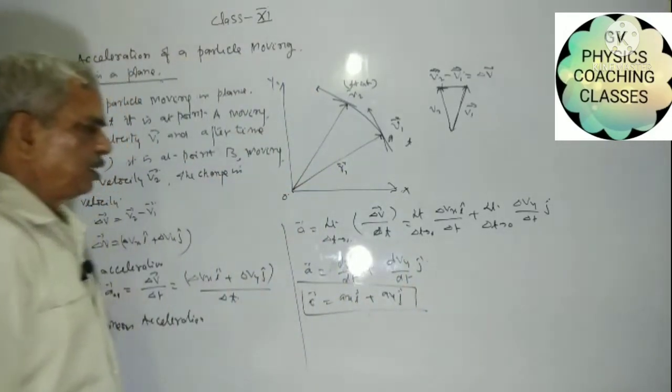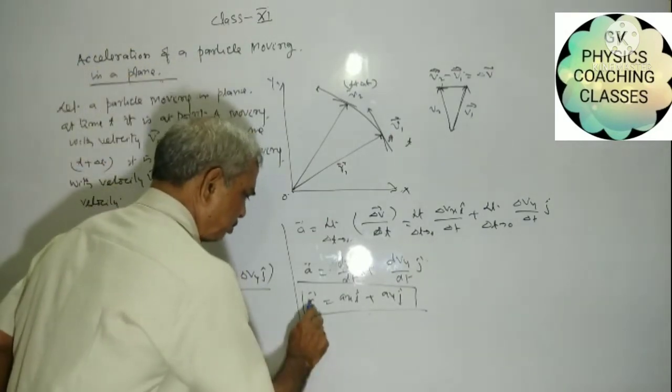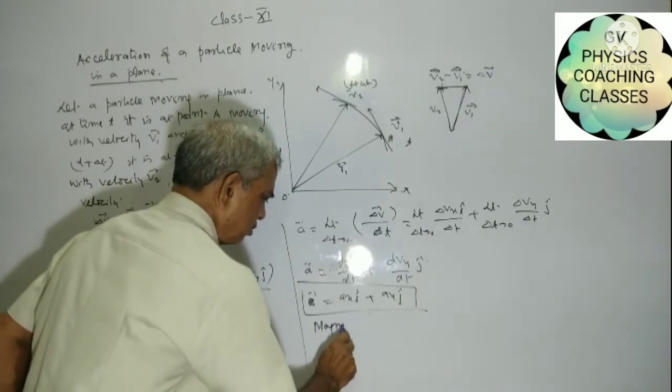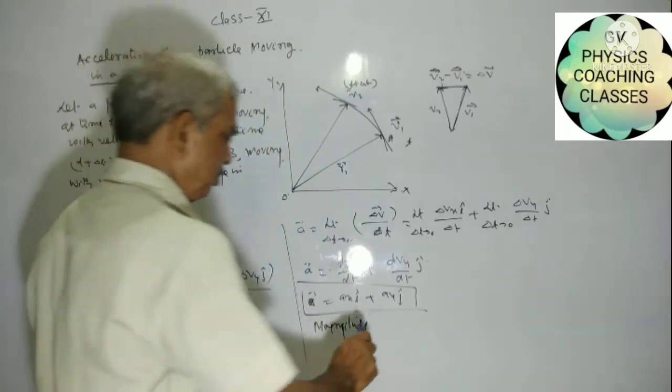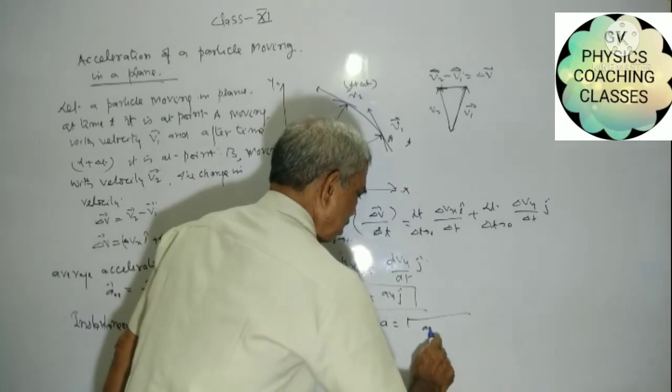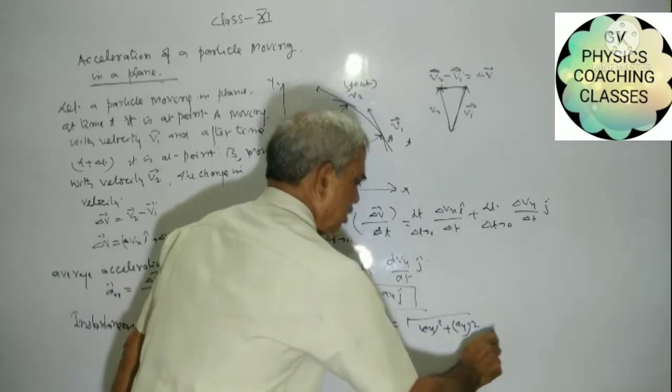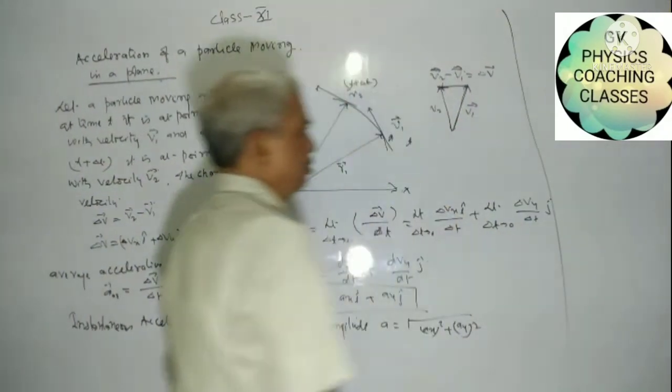This is the instantaneous acceleration. Further, in vector form, A is equal to square root of Ax squared plus Ay squared. And further we can write it: